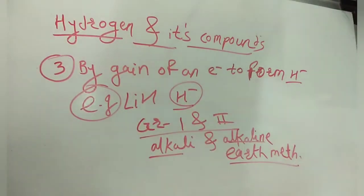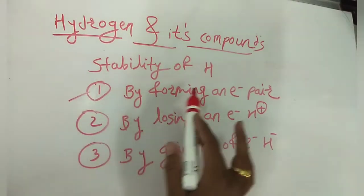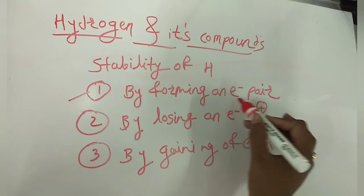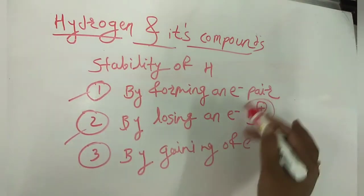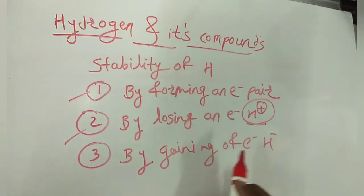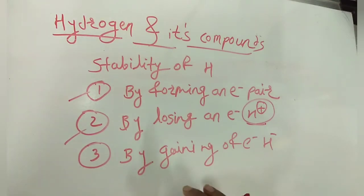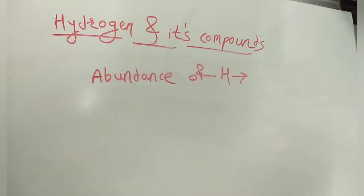To summarize, hydrogen achieves stability in three ways: first, by forming an electron pair to generate a covalent bond (P-block elements, e.g., methane, water); second, by losing an electron to form H⁺, which in aqueous solution of HCl or H₂SO₄ exists as H₃O⁺; third, by gaining an electron to form the hydride ion H⁻, which is characteristic of alkali and alkaline earth metals.